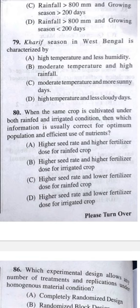Question 80: When the same crop is cultivated under both rainfed and irrigated conditions, which information is correct for optimum plant population and efficient nutrient use? Answer B — higher seed rate and higher fertilizer dose for irrigated crops, because use efficiency is more under irrigation. For rainfed crops, we apply less seed rate and less fertilizer as rainfall is unpredictable.